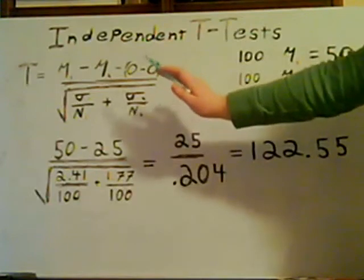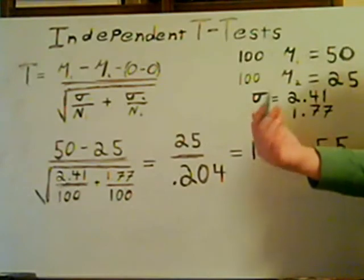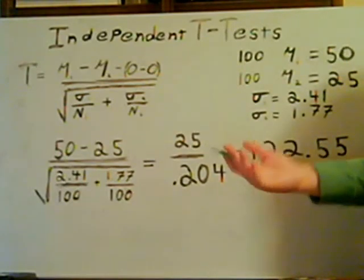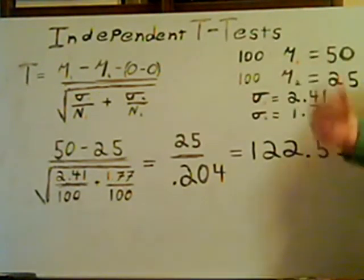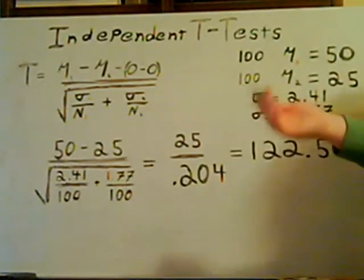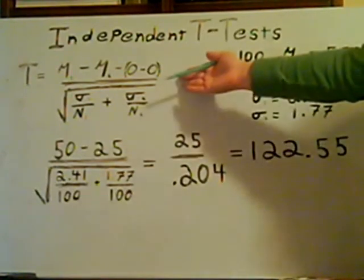The formula is mean 1 minus mean 2 minus the null hypothesis, which is 0 in this case, because we're measuring for a difference, not anything higher, not anything lower, but just a difference. So the null hypothesis would be that there is no difference, which translates out as 0.